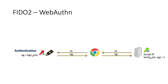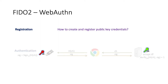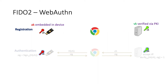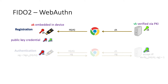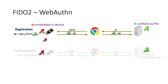A WebAuthn client will first hash the challenge and then send it to the token. For registration, the token has a so-called attestation key pair embedded by the manufacturer, and the secret attestation key A never leaves the device. The public verification key V is carried in a PKI certificate, so we can assume the server already has that V key. The server sends a random challenge to the token. The token generates a public key credential — a secret and public key pair — then uses the secret attestation key to sign the hashed challenge and generate the public key, sending both the public key and signature to the server. The attestation private key A is known by the manufacturer, but the generated secret key S is only known by the token.